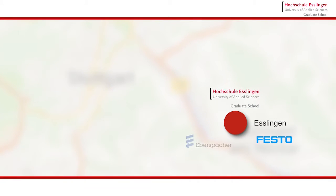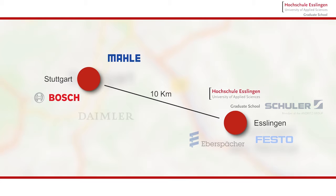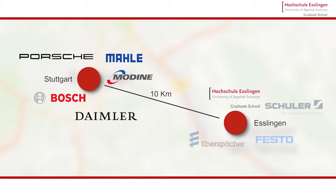Esslingen is somewhat within the Stuttgart region and Stuttgart is known for its high industrial nature. A lot of big companies here, especially in the automotive field.